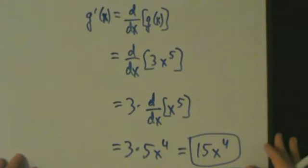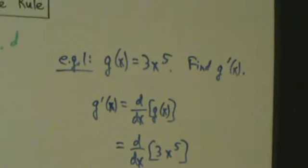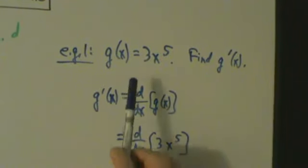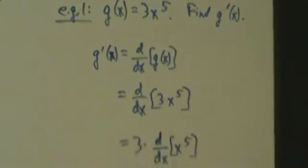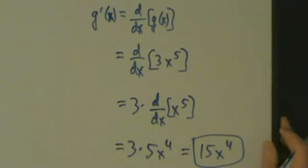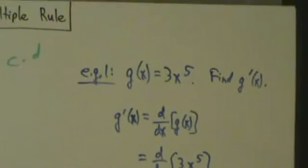So when you do more and more derivatives, you'll be able to just see this pretty much right away. So if g(x) is 3x⁵, then the derivative is going to be 15x⁴. That's example 1. Let's see another example.